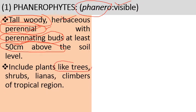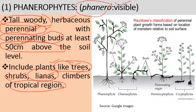Phanerophytes include plants like trees, shrubs, lianas (commonly known as woody climbers), other climbers, and plants of the tropical region. This picture shows Raunkiaer's classification of life forms, with the first plant representing the Phanerophytes.